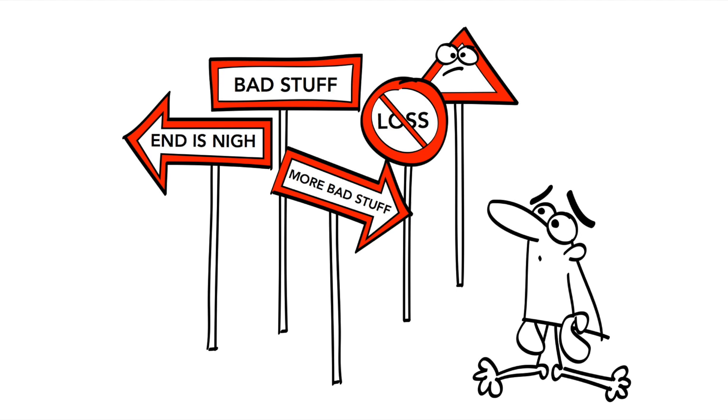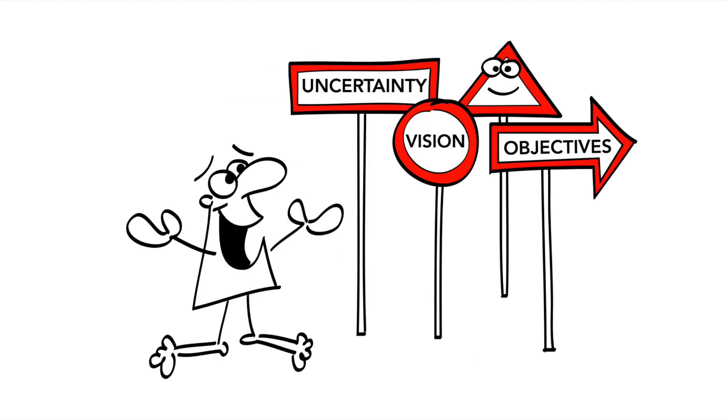Risk is actually about having a clear understanding of what your objectives are, understanding where the uncertainty lies, and understanding the effect that uncertainty can have on your ability to achieve the objectives you've actually set.